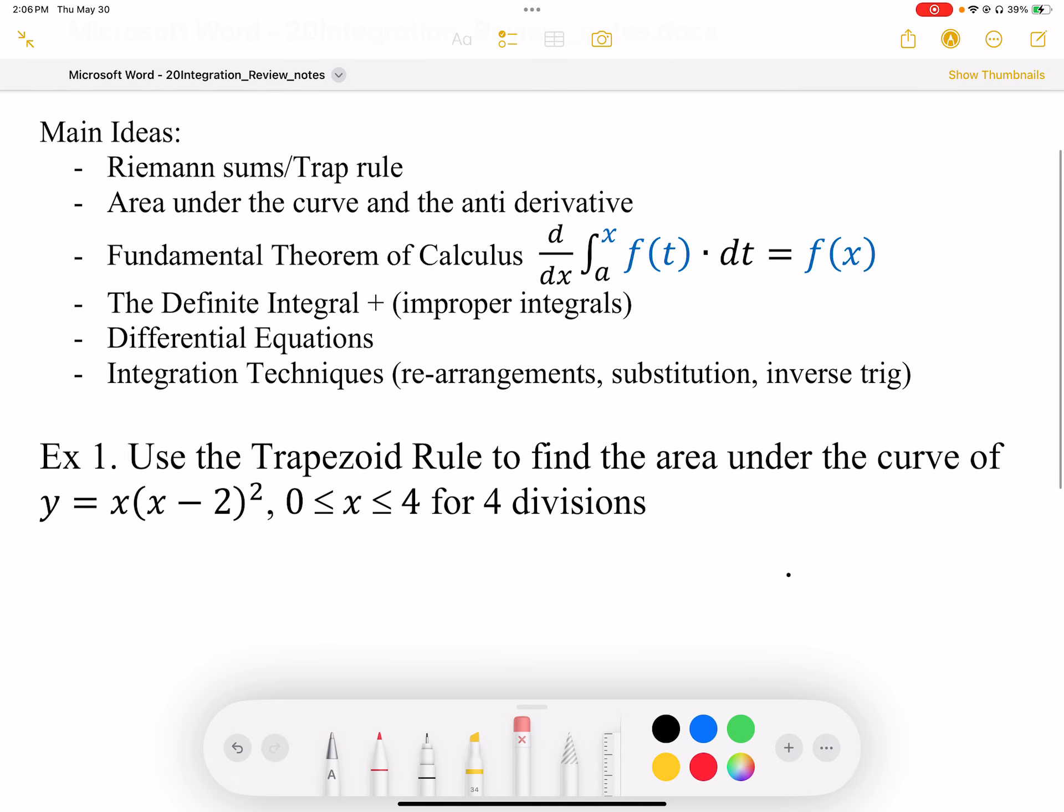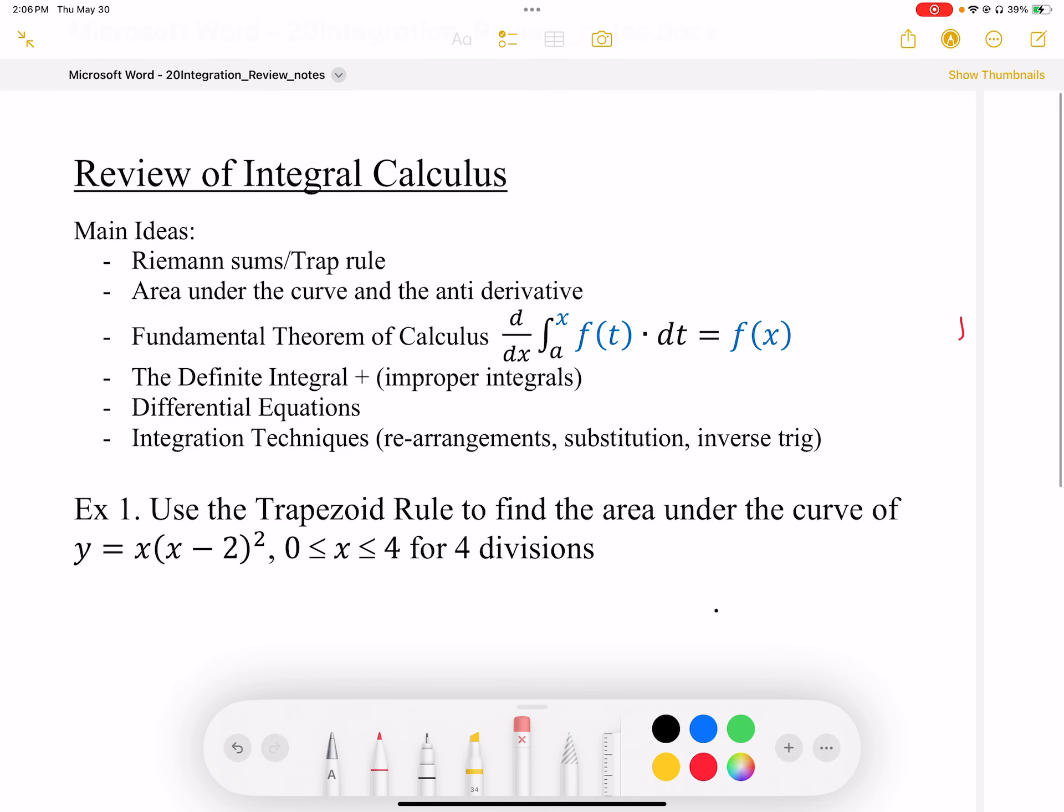The definite integral and improper integrals - improper integrals use a limit. We have to apply limit notation. Improper integrals are unbounded integrals, and it's really important to make sure that we don't integrate across vertical asymptotes.